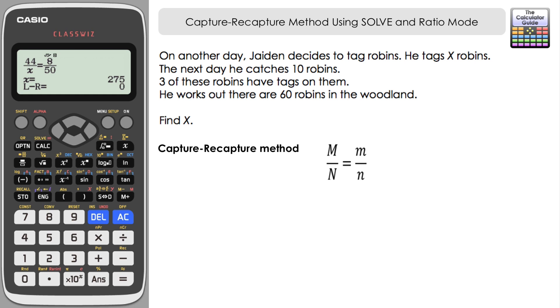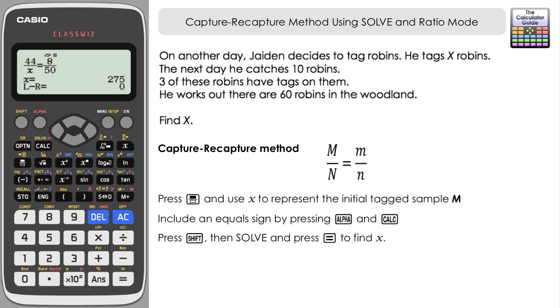Let's set up the same set of fractions again. Fraction button. This time it is x on the top—our capital M is unknown—and on the bottom, well, he's worked out that the total population, or his estimate for the total population, is 60, so we'll input that there. Navigate right, and then alpha, and then introduce an equal sign. Fraction button again, and then it's our proportions from the recapture. So that was 3 tagged robins out of 10 that were recaptured. And shift SOLVE for x.